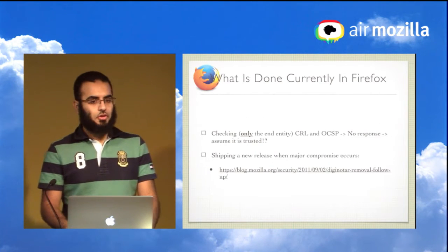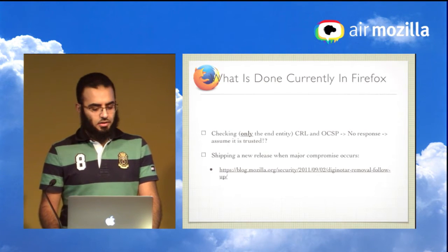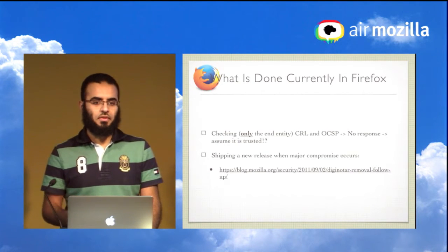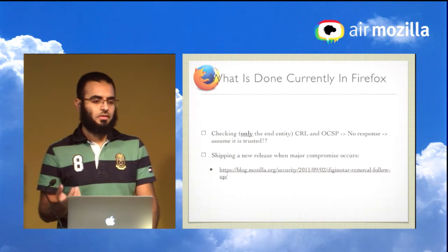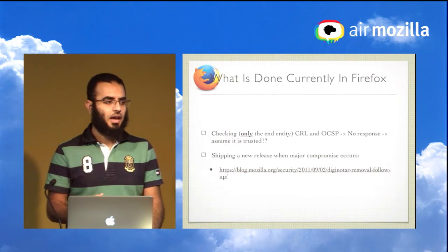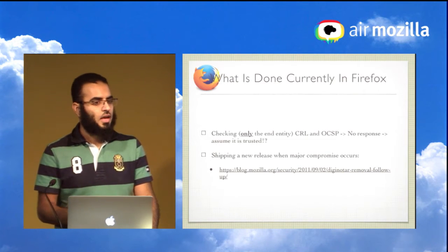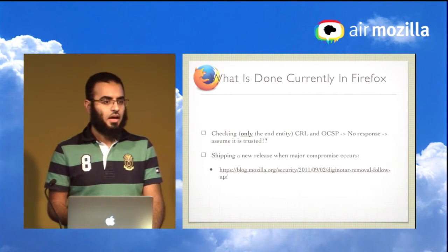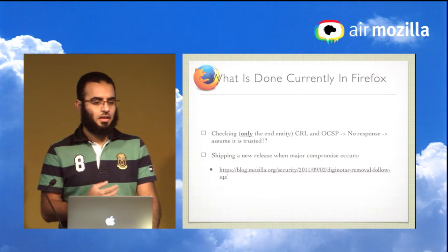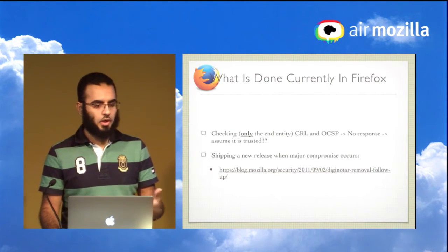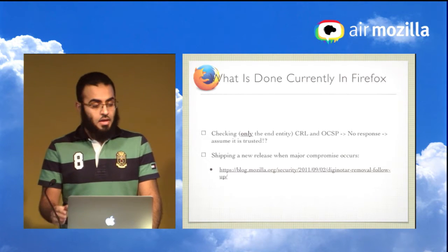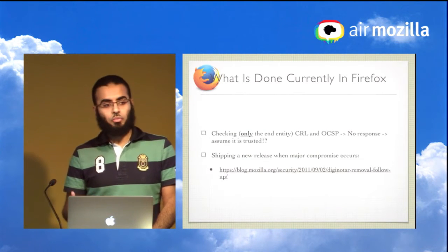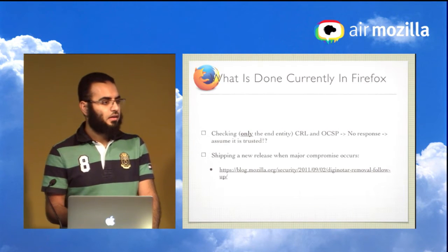In Firefox we actually check only the end-entity certificate — the certificate provided by the server itself — because that certificate is signed by a CA, forming a chain up to one of the trusted roots in Mozilla's CA program. Currently, when we don't get a response, we automatically assume the certificate is trusted.